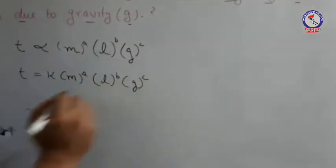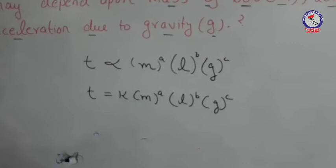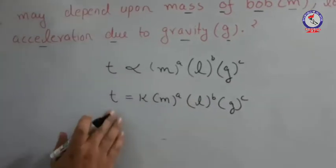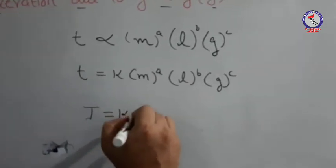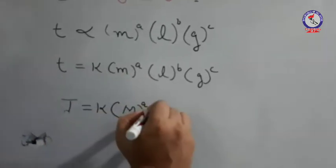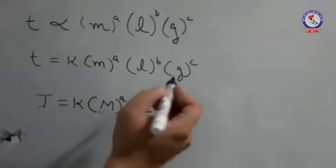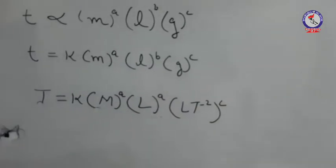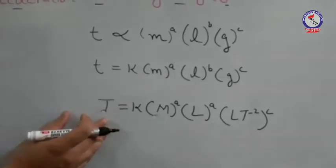We convert proportionality into equality by introducing a constant K, so T equals K times M to the power A, L to the power B, G to the power C. Now substituting the dimensions on both LHS and RHS: T represents time with dimension T, K is a dimensionless constant, M has dimension M, L has dimension L, and G has dimension L T to the power minus 2.